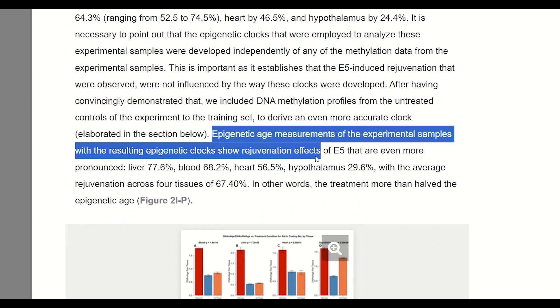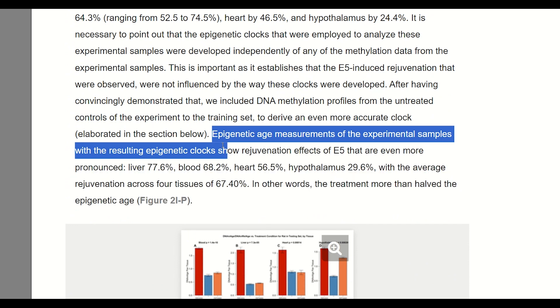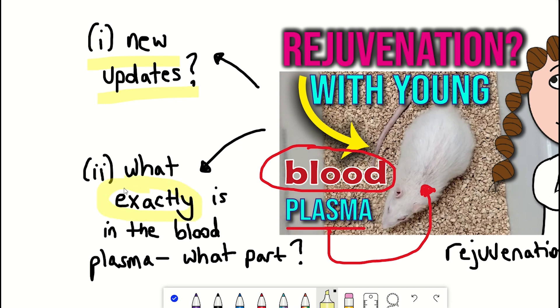Suggesting as they claim in this paper that E5 was having a rejuvenation effect on the different tissues tested, here the liver, blood, heart and hypothalamus, with the change being the lowest in the hypothalamus, which could be linked to what is this E5, but we'll come back to that in a second.